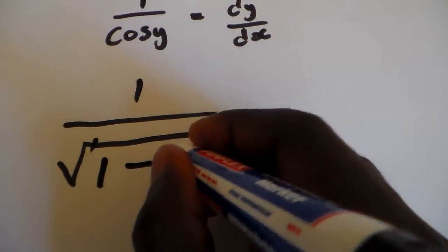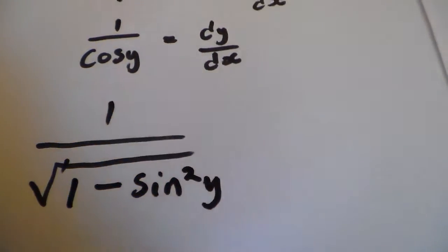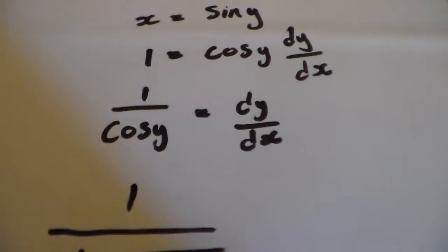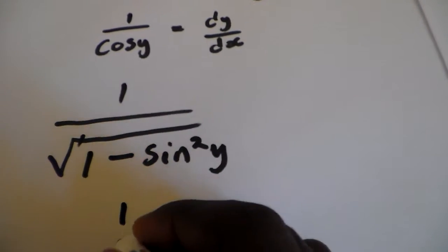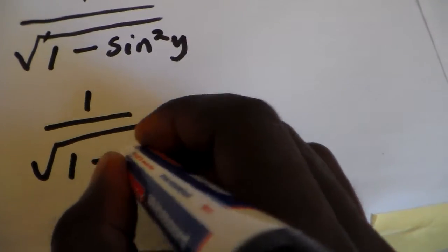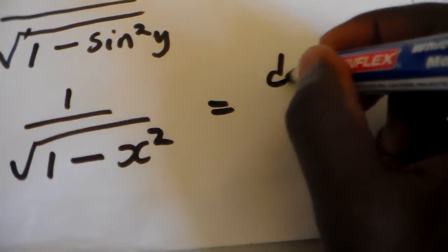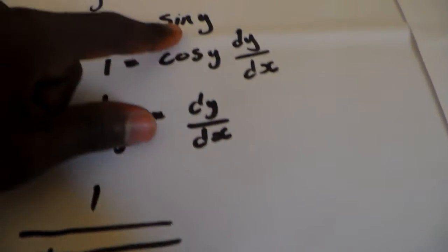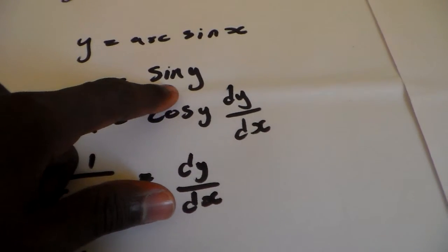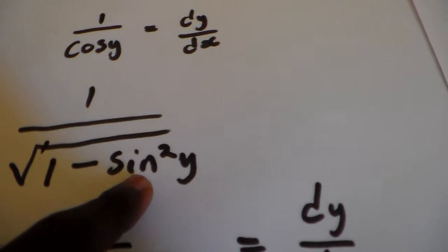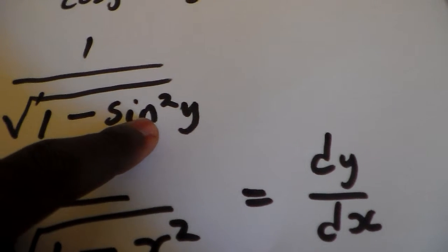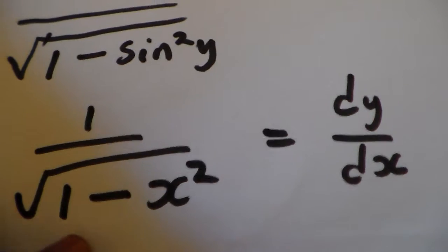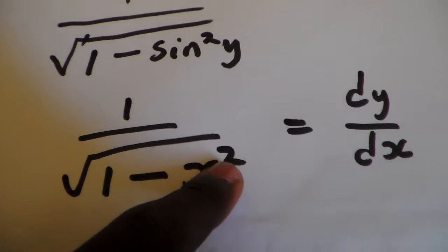We substitute this into our formula, giving us 1 over the square root of 1 minus sin²y. Remember, since x is equal to sin y, that means sin²y equals x². We substitute sin y with x, so we get 1 over the square root of 1 minus x squared.